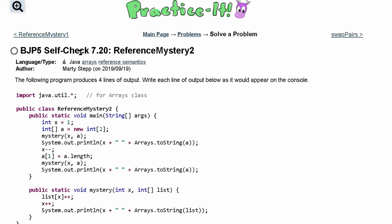We're looking at Practice-It self-check 7.20, which is ReferenceMystery2. The following program is going to produce four lines of output. We want to write each line of output below as it would appear to the console.